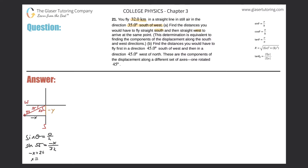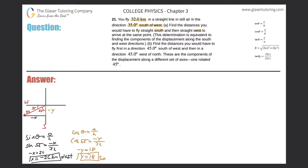Moving the negative sign over, x equals negative 26 kilometers — that's how far you'd have to travel west. Now for the south direction (negative y): I know the hypotenuse and the angle, and I'm looking for the adjacent side, so I use cosine. Cosine of 55 equals negative y over 32, giving negative y = cosine(55) × 32 = 18, so y equals negative 18 kilometers.